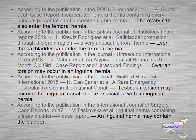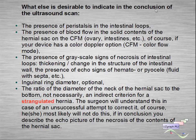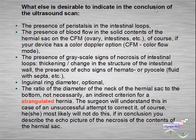Inguinal hernia may also contain the bladder. What else is desirable to indicate in the conclusion of the ultrasound scan? First of all, the presence of peristalsis in the intestinal loops. The presence of blood flow in the solid content of the hernial sac on color flow mode — of course if your device has a color Doppler option.